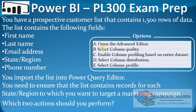Under the options, we have: option A, verify this in Advanced Editor; option B, verify this in Select Column Quality; option C, enable column profiling based on the entire data set; option D, select Column Distribution; and option E, select Column Profile.